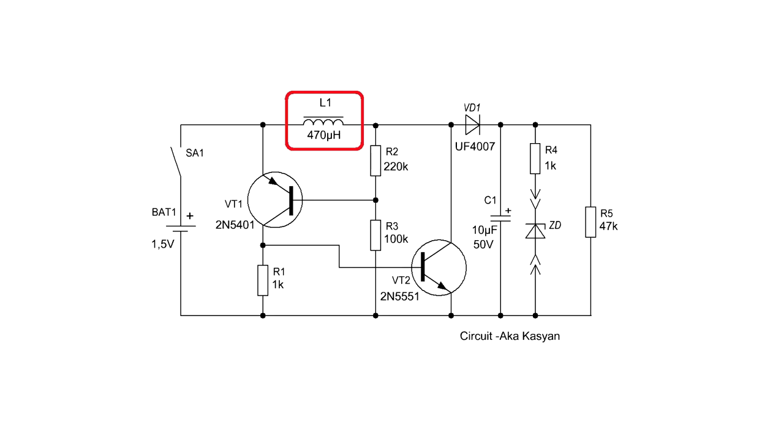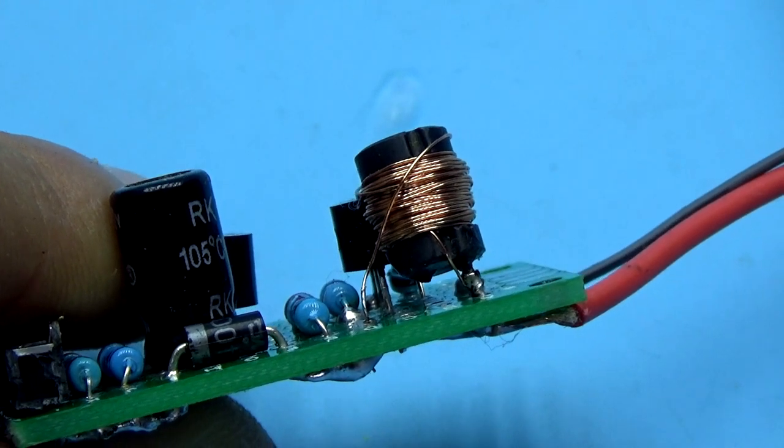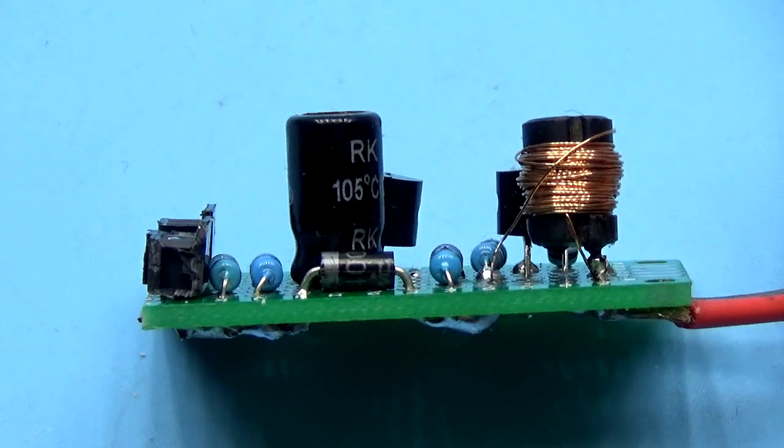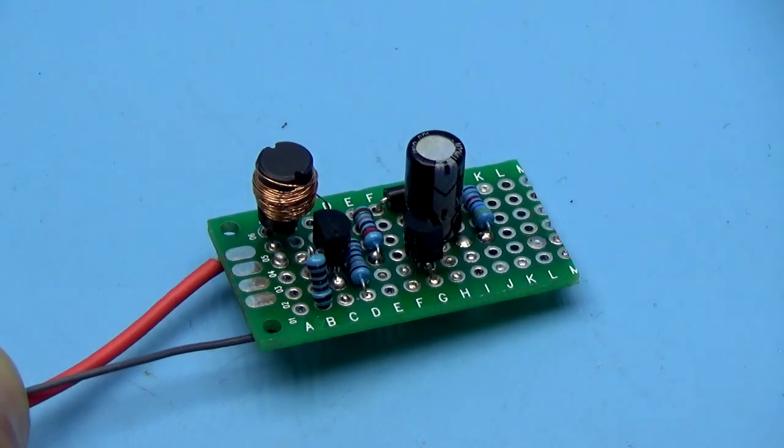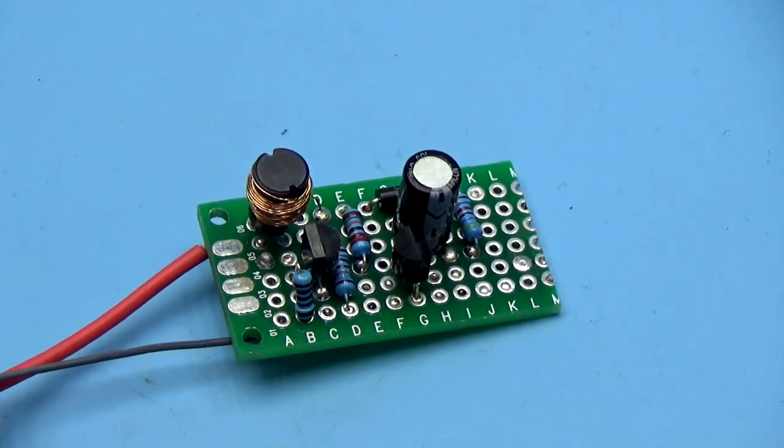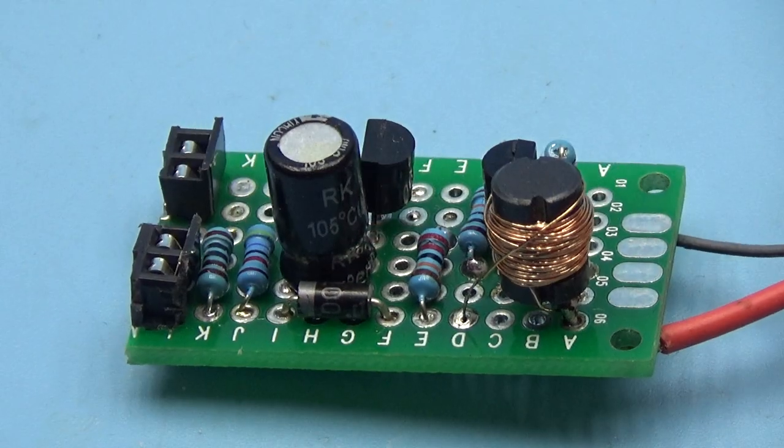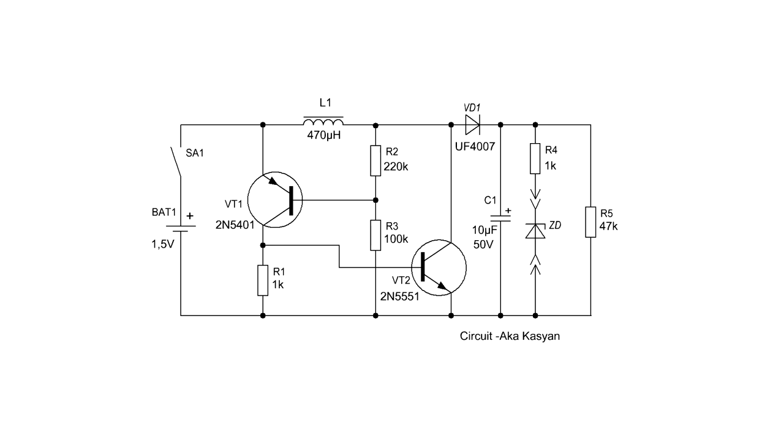The choke is wound on a ferrite dumbbell. I cannot specify exact dimensions, but they aren't critical. My choke is wound with a wire of 0.15 mm and consists of 150 turns. In this case, the self-induction voltage from the choke reaches to 40V and will increase up to the breakdown of the dielectric layer of the capacitor. To prevent this, a load resistor is connected to the output of the converter.